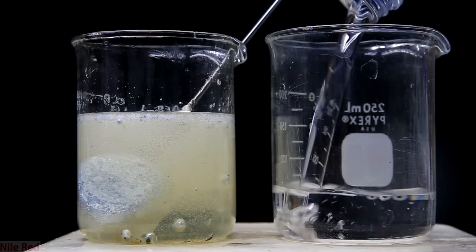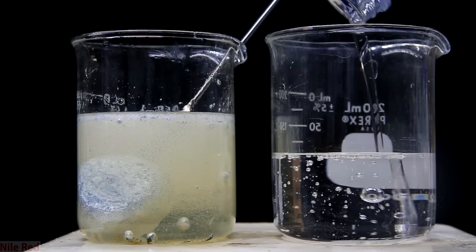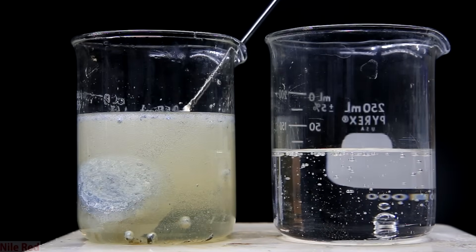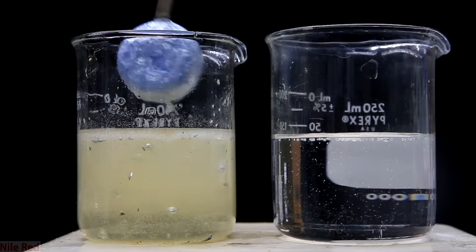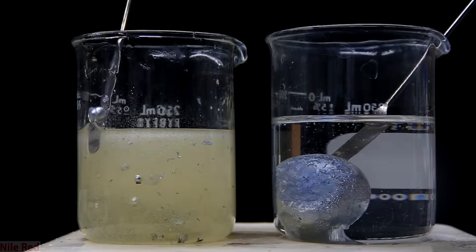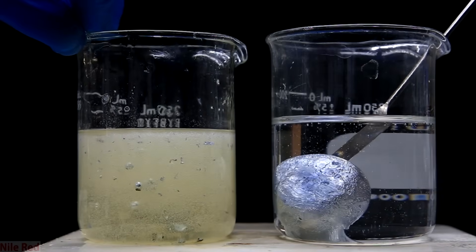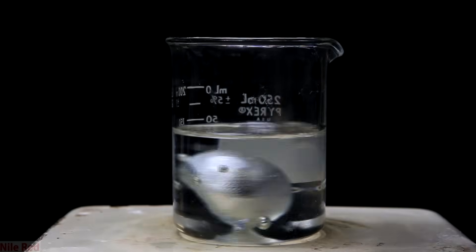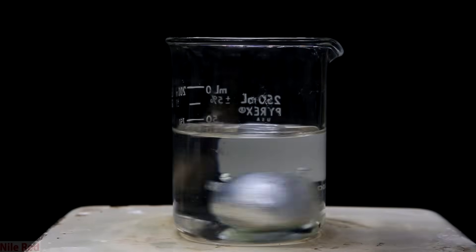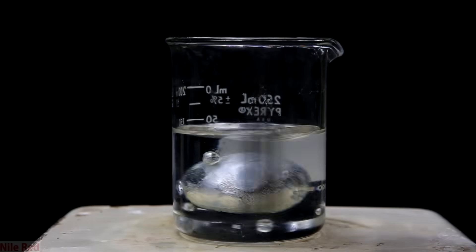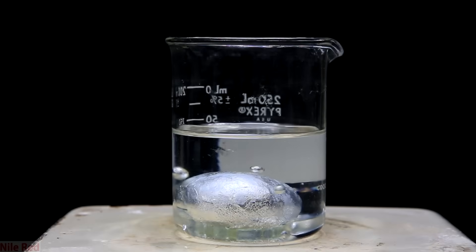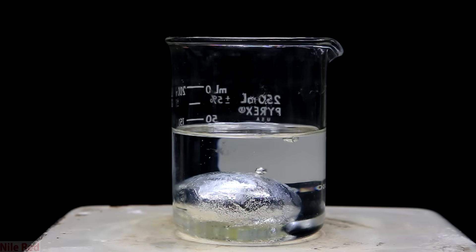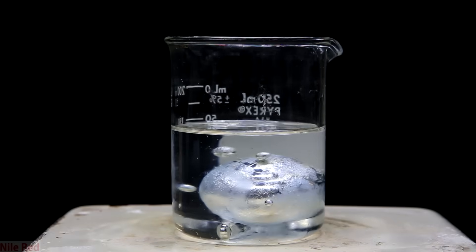And now for one final step of cleaning it we pour some more mineral oil into another beaker. The large potassium blob and as many of the smaller potassium pieces that I could get were also transferred. So just like before we turn up the heat and we melt the potassium again. This time though I didn't add any isopropanol because I figured that the amount of oxides on the surface were probably super low.